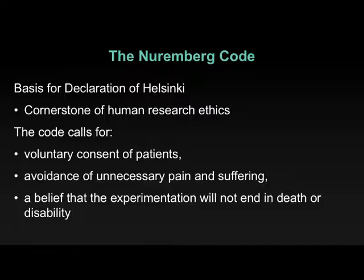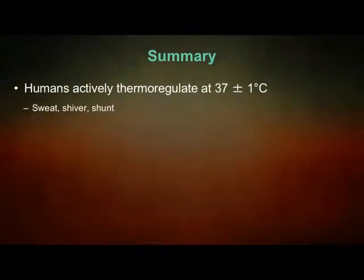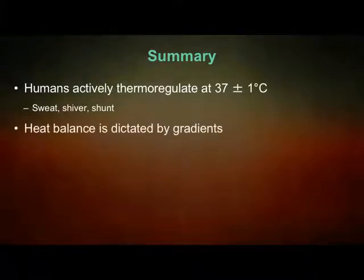That's it for the end of those slides. The summary: 37 degrees is a temperature we like to maintain — in this section we're talking about how we regulate around 37 degrees Celsius. Sweat, shiver, we can shunt blood back and forth — these are some of the ways we maintain body temperature. Body temperature is all based on gradients: heat flow is a gradient. If there is more heat outside than inside, heat will flow from outside to inside and your body gets hotter.